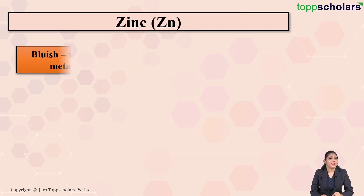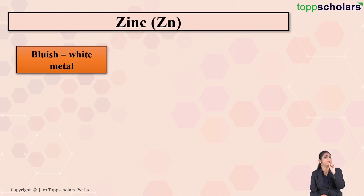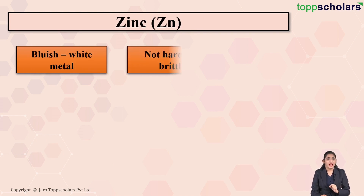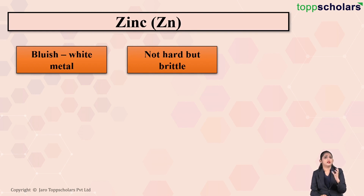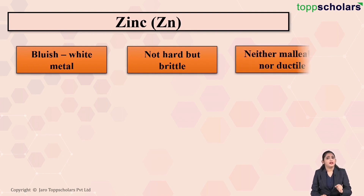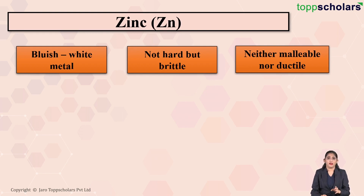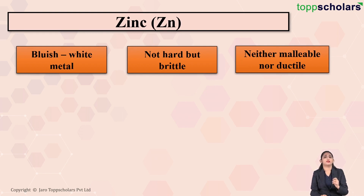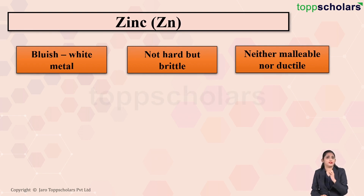Now let's move on to zinc. Zinc is a bluish white metal that is not hard but is brittle. Zinc is neither malleable nor ductile, which means you cannot prepare zinc sheets nor zinc wires. Depending on these properties, zinc has some specific uses.